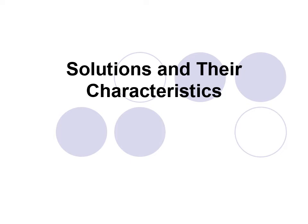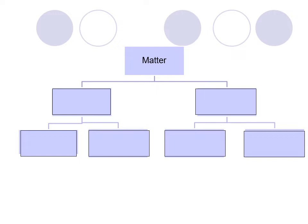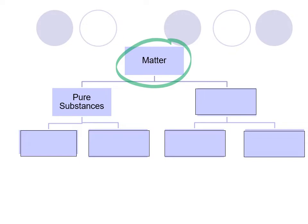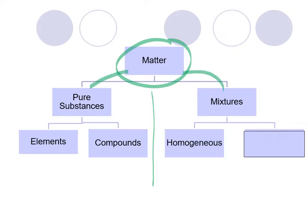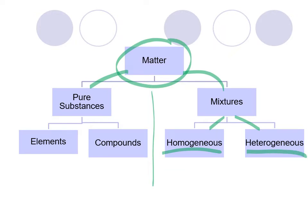In chemistry, we can divide matter into two particular groups: pure substances and mixtures. Under pure substances, we can further divide that into elements — things you can find on the periodic table — or compounds, which are combinations of those elements. The second group we can classify matter into is mixtures. Mixtures can be divided into homogeneous and heterogeneous mixtures.